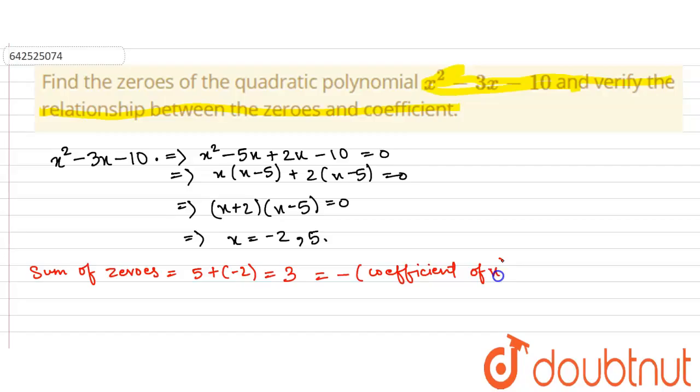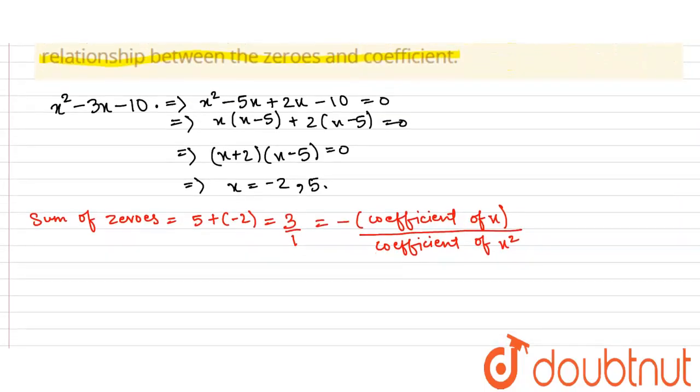coefficient of x divided by coefficient of x². Why? Because 3 is nothing but 3 by 1, which can be written as minus of minus 3. Now the coefficient of x is minus 3, so minus of minus 3 is again plus 3, and we can write 1 as coefficient of x² because coefficient of x² is 1. So that gives the first relation.